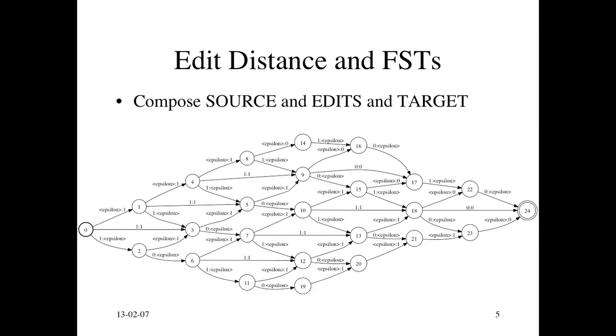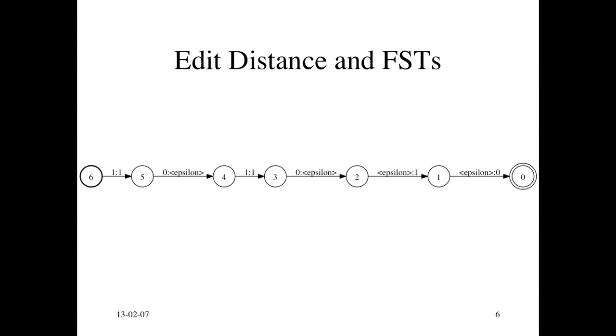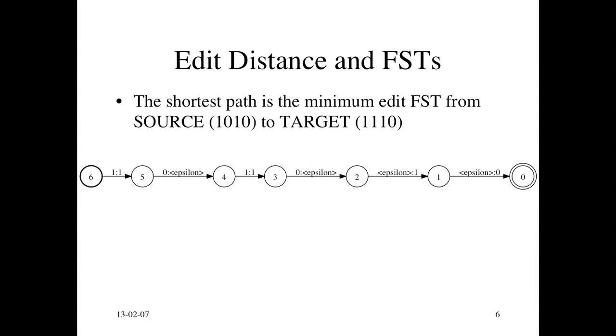It's giving you every possible way to edit source string to a target string. What we're interested in is the minimum cost edit. So you can take the shortest path through this automaton, this finite state transducer. And what you get is something more readable and understandable. So it just says you're going to edit 1, 0, 1, 0 to a target 1, 1, 1, 0.